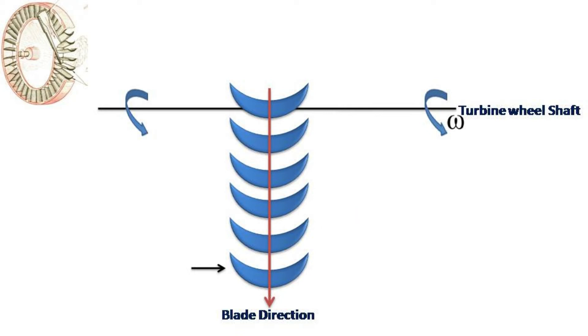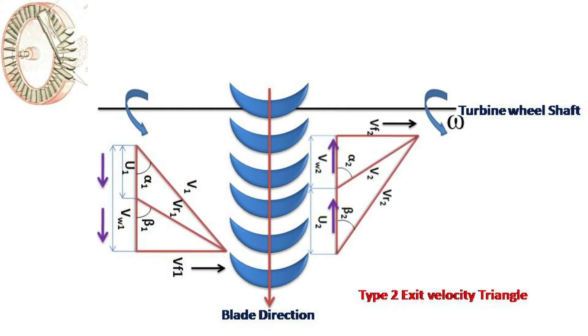Turbine rotates with an average angular velocity omega in the direction of the blade movement. Inlet and exit velocity triangles can be shown for blades like this.